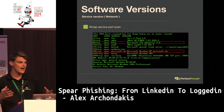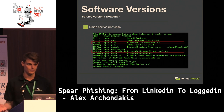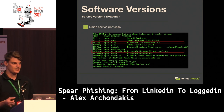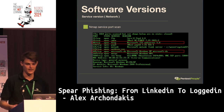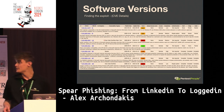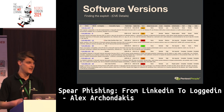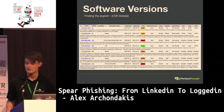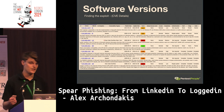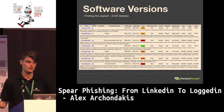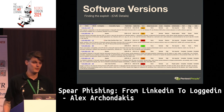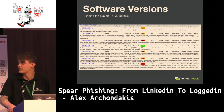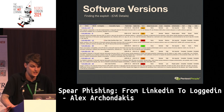Once we have a software version, what's the next step? How do we find the exploit? CVE Details contains thousands of published exploits. You can search the software version and find anything to use against, in this case, the web application. As we can see, these are just a few of the ones found, including buffer overflows and denial of service attacks.